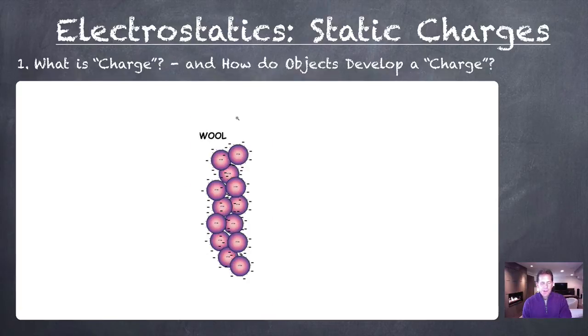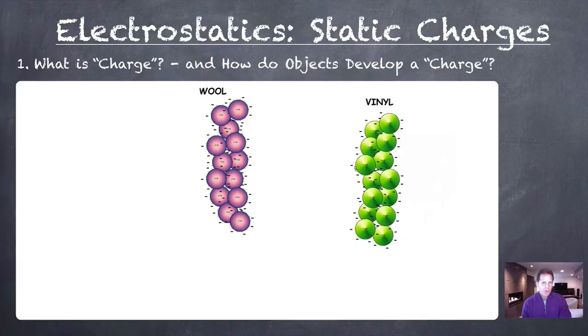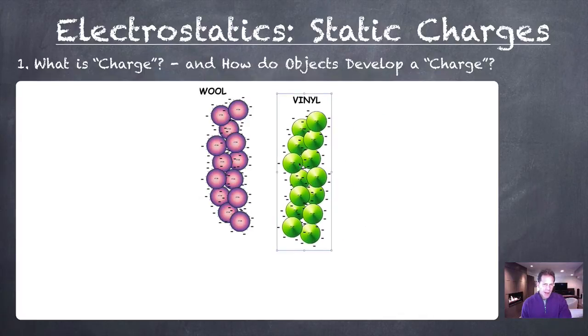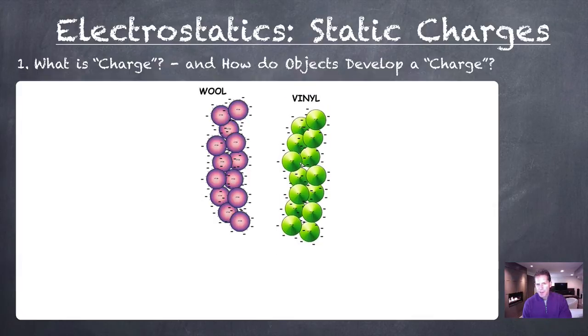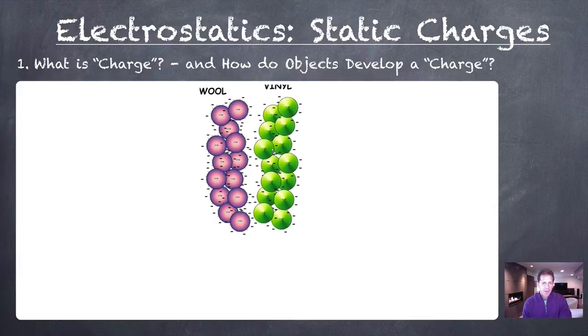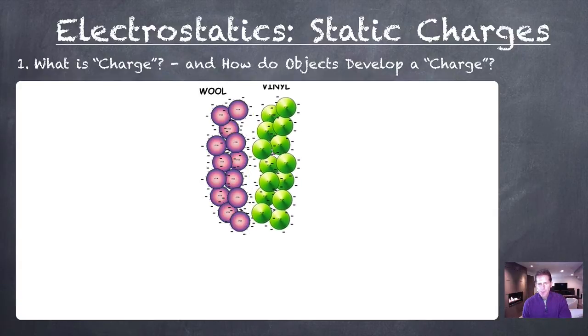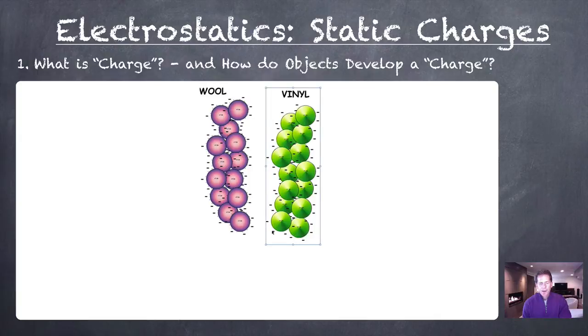And if I was trying to develop some static charge in an object, say a comb or a piece of vinyl, I'd bring it up to the wool sweater and rub it back and forth against the wool sweater. So as that happens, the only particles that are likely to interact directly would be the electrons in the outside regions of the two materials. So if you rub them back and forth, then there's a chance electrons could be transferred from one to the other. In this case, the electrons are transferred from the wool onto the vinyl.